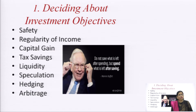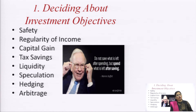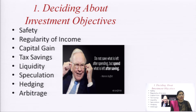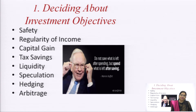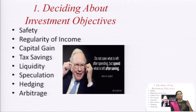If you have a long-term approach, you can invest in shares as they give better returns over the long term. Other objectives include speculation for short-term gains, hedging using products like call options, put options, futures, or forwards to insure risk, or arbitrage — buying securities from a market at a lower price and selling in a market with a higher price. These objectives can change over time according to the investor's priorities.